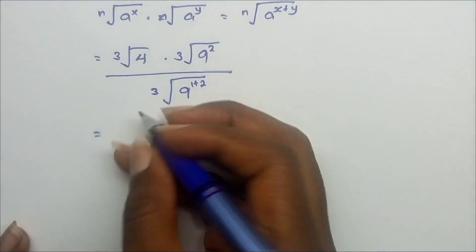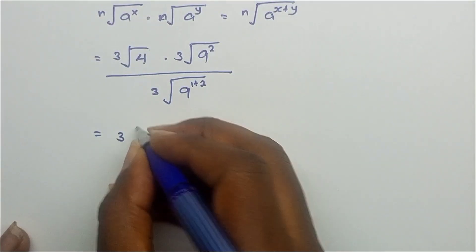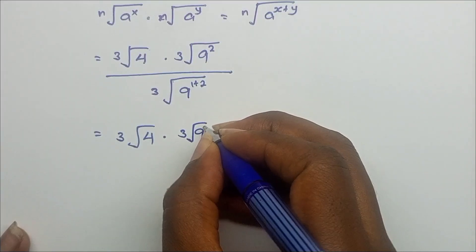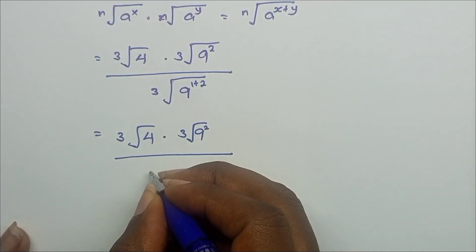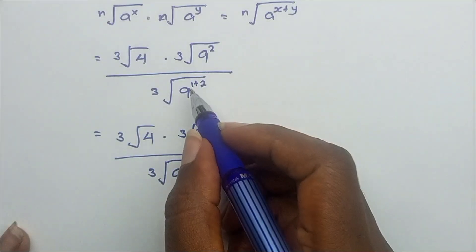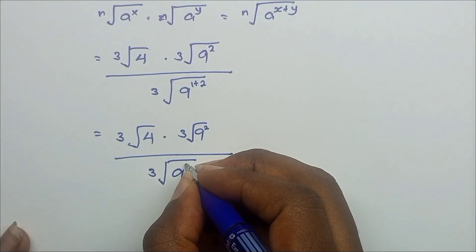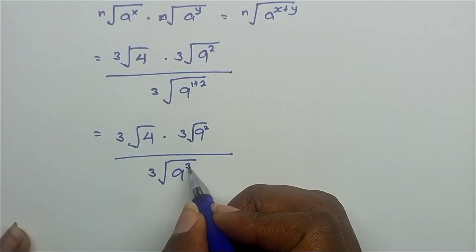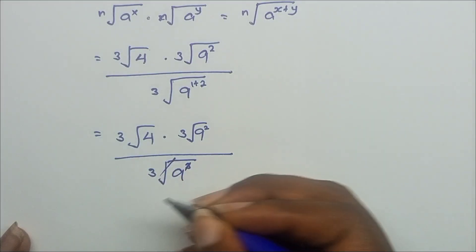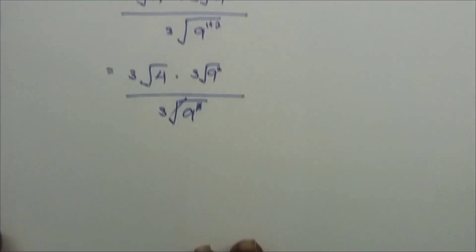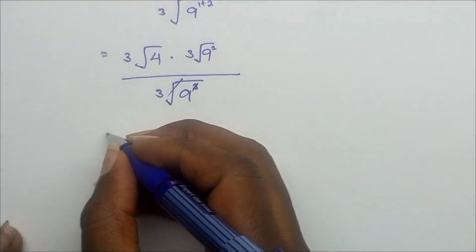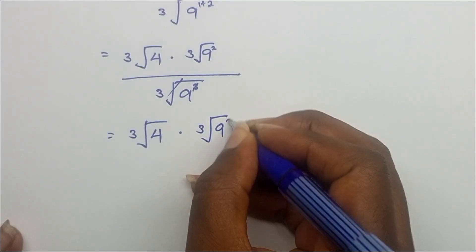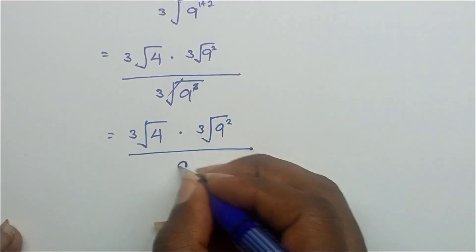So this equals cube root of 4 times cube root of 9 squared, over cube root of 9 to the power 3. Since this is a cube root and the power is 3, the root and power cancel, leaving cube root of 4 times cube root of 9 squared over 9.